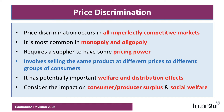Indeed, it occurs in all imperfectly competitive markets. So it doesn't happen in perfect competition, but it will happen in monopoly, duopoly, and oligopoly — in part because this strategy requires a supplier to have some pricing power, some autonomy over the prices they charge. Whereas in perfect competition, of course, each firm is a price taker.